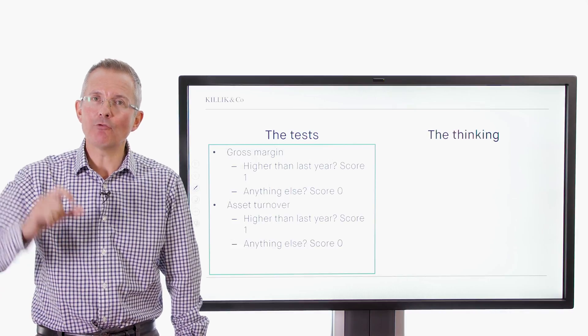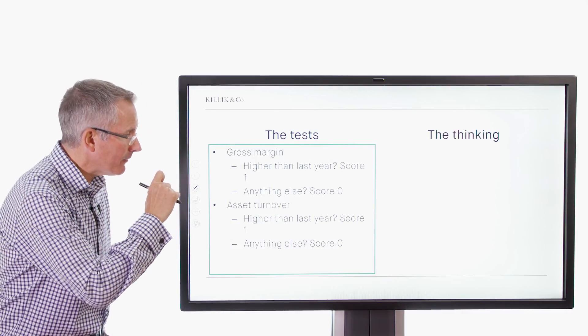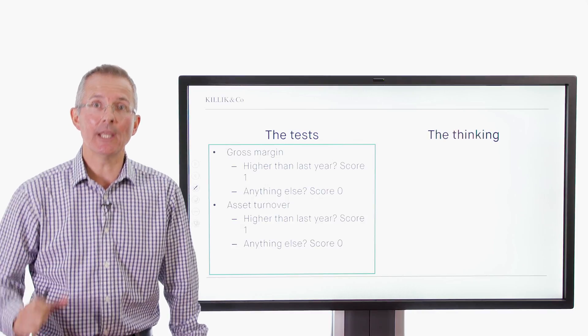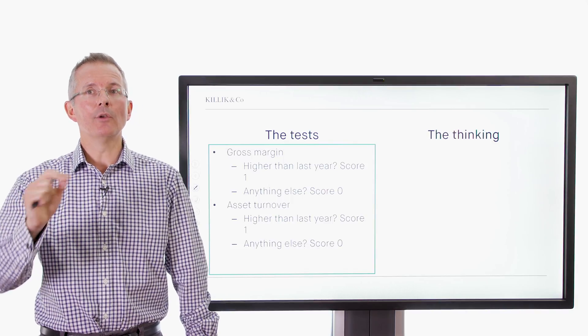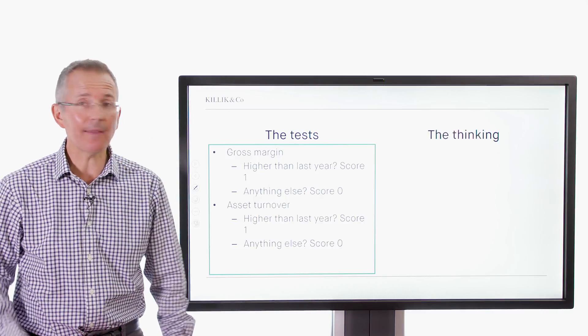And then finally, asset turnover. Now, I haven't written out all the formula here. That's for the eggheads, in a sense. But are you able to squeeze sales out of your assets, essentially? Higher than last year, you're better at it than you were a year ago. Score one. No, you're not. Score zero. So two more points going begging there.